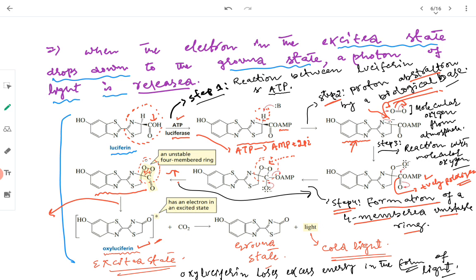When the retro cycloaddition occurs, the two electrons move such that CO2 is eliminated. The molecule then returns to the ground state, and this excess energy is released in the form of light — the cold light. Oxyluciferin loses excess energy in the form of light. This is the whole chemical reaction involved in cold light production by fireflies.